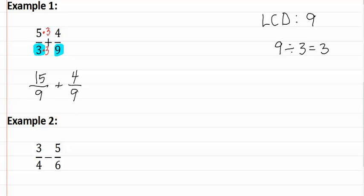We can now add the two fractions together. Fifteen plus four is nineteen-ninths. Remember when adding fractions you add the numerators and keep the denominators the same. This gives us our answer which is nineteen-ninths.